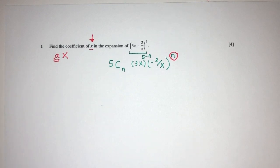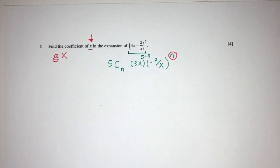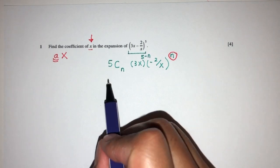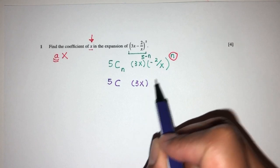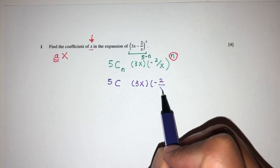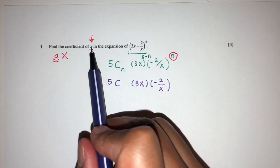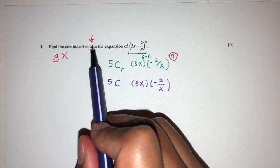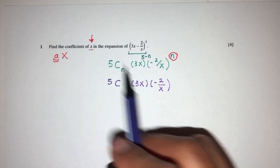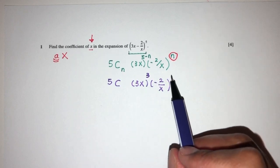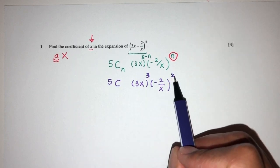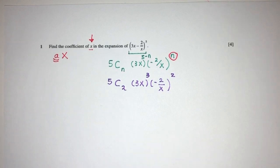This is done by trial and error, but from experience you can do this in your head and then choose the value of n. So that will be 5 choose something, and you have 3x and minus 2 over x. If you want x to be the term we need, we need this to be 3. So this will have to be 5 minus 3, that will have to be 2. So this will be the value of n that we'll be choosing.